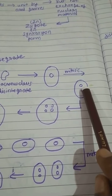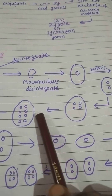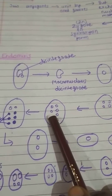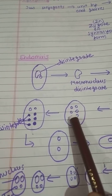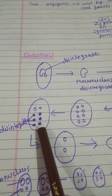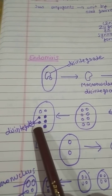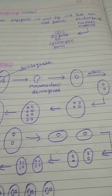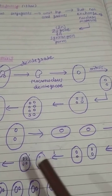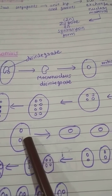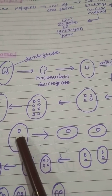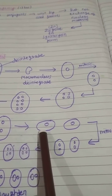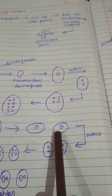Through meiosis, two nuclei form, then four, then eight nuclei. After eight nuclei are formed, six nuclei disintegrate and two micronuclei remain.